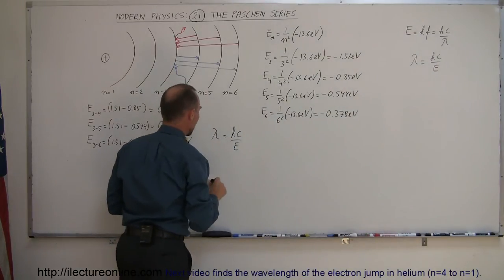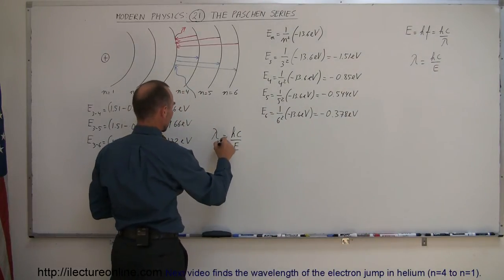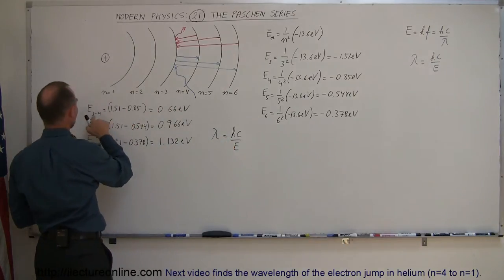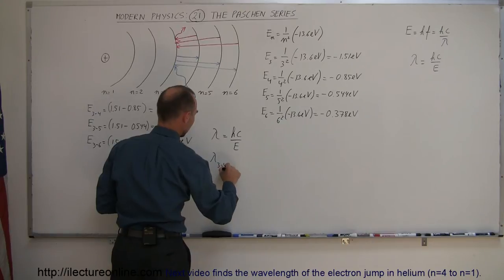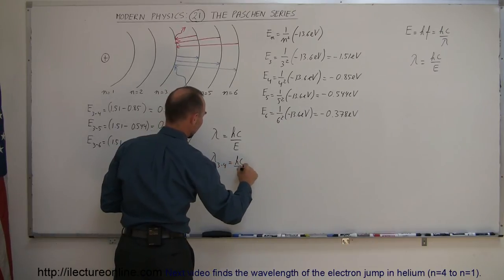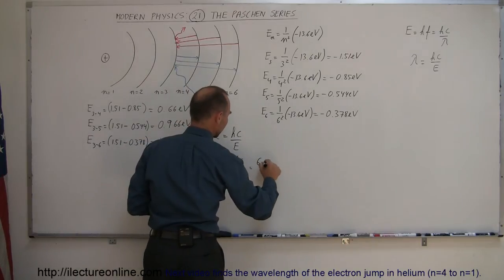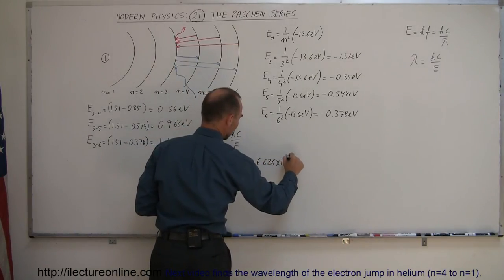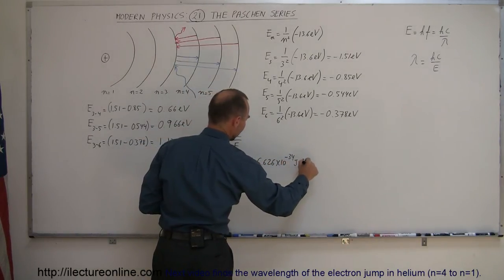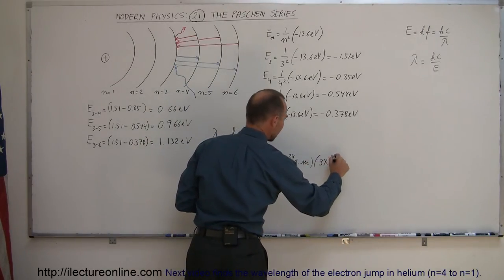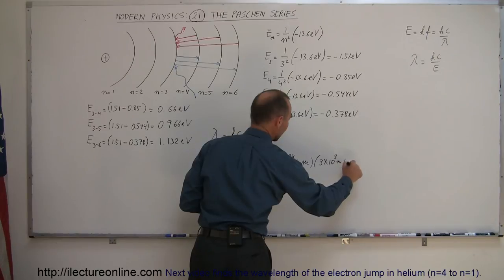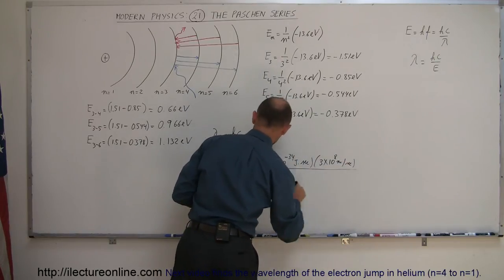So if we want to know what the wavelength is for this particular photon, the photon from three to four is equal to hc divided by the energy from three to four, which is equal to 6.626 times 10 to the minus 34 joules times seconds, times the speed of light, 3 times 10 to the 8 meters per second, divided by the energy difference.